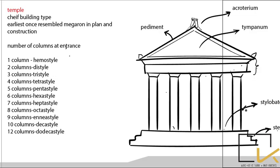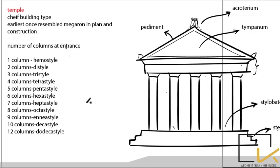The five basic parts of a Greek temple are: the pediment (triangular portion outside), tympanum (triangular portion inside), acroterion (small carving at the top), the stylobate (where the column meets the floor), and the stereobate (the steps). Depending on the number of columns at the entrance, there are 11 types — from one column (haplostyle) up to twelve columns.